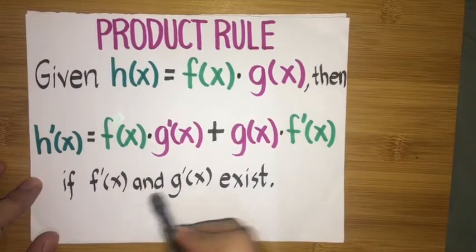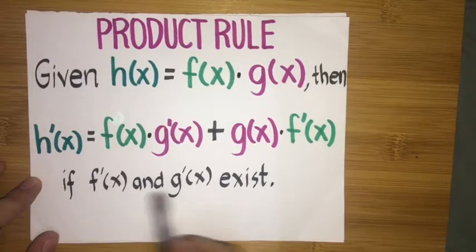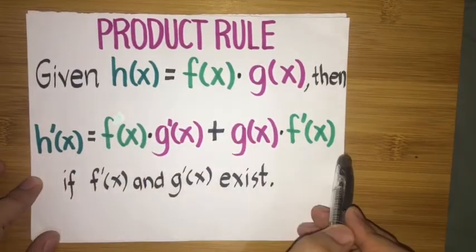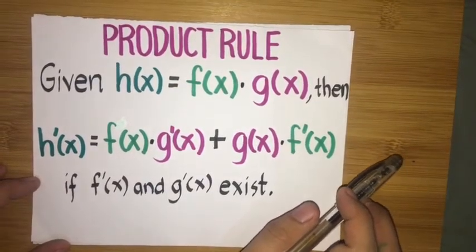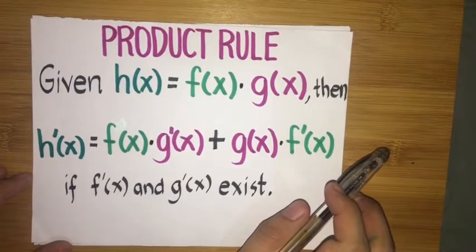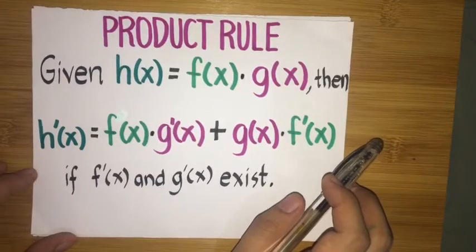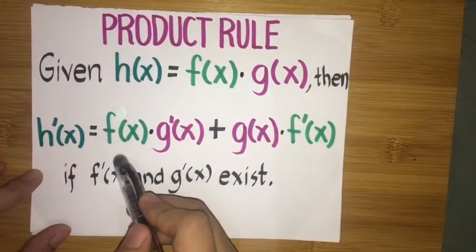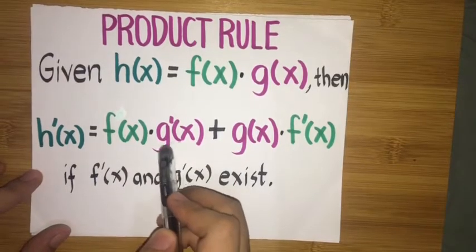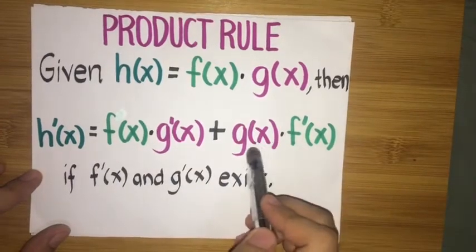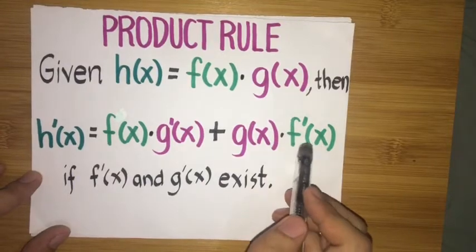This applies if f prime of x and g prime of x both exist — they must both exist for this formula to be applicable. Product rule is most often used when we encounter functions that are a product of two different functions. We can interpret it as: copy the first function multiplied by the derivative of the second, plus copy the second function multiplied by the derivative of the first.